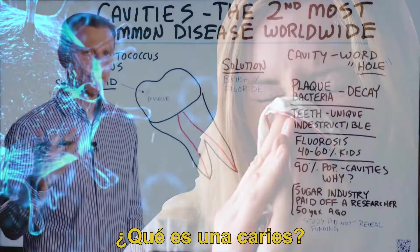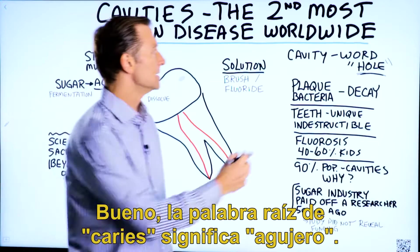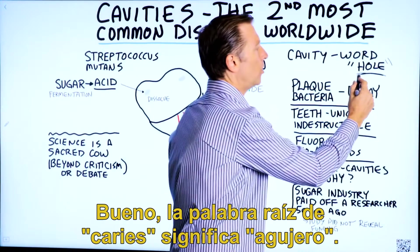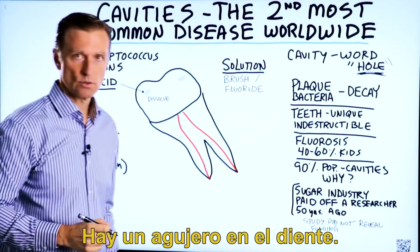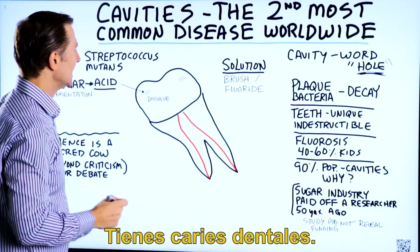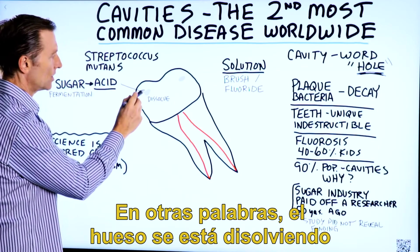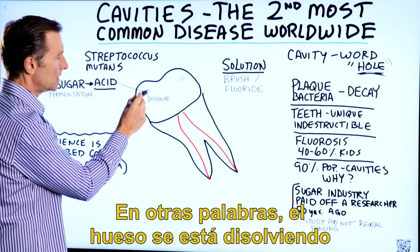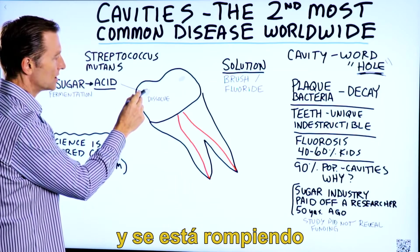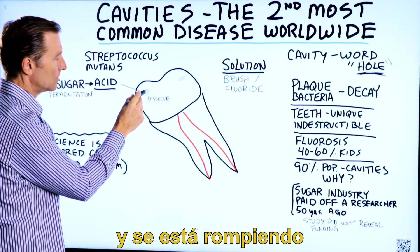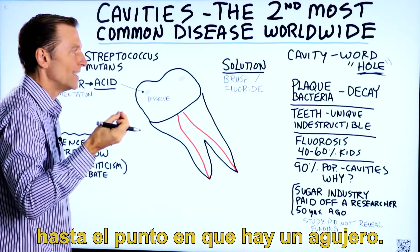What is a cavity? The root word for cavity means hole — there's a hole in your tooth. You're getting dental decay. In other words, the bone is dissolving and breaking down to the point where there's a hole in it.